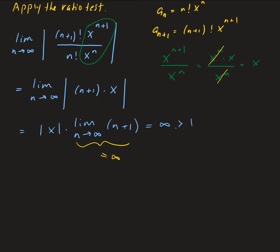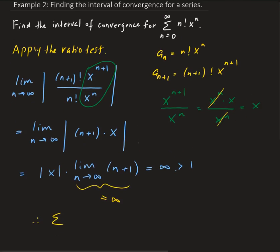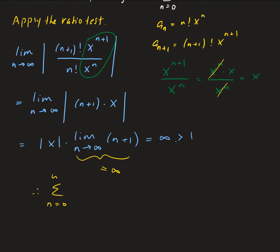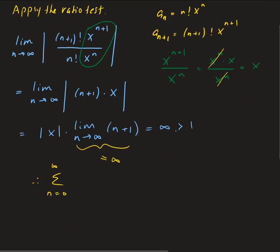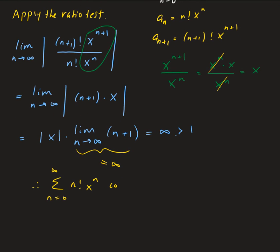So the series converges just at the origin. Therefore, the radius of convergence is zero, because convergence occurs only at that single point. There is no interval — it's just at the point, so the radius has to be zero.